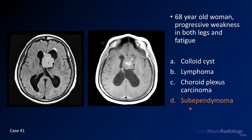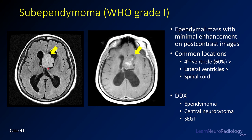This is a case of subependymoma. What you have is an intraventricular mass sitting in the anterior margin of the left lateral ventricle, kind of near the foramen of Monro — a pretty decent place for central neurocytoma. But what you don't have is avid enhancement. When you see an intraventricular mass without much enhancement, you should be thinking about a subependymoma. These are grade one tumors arising from the subependymal margin, and they're not that common.